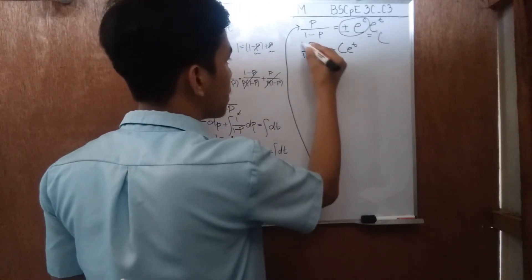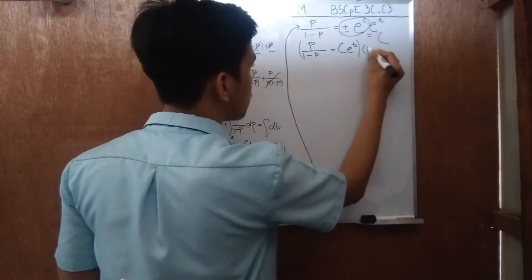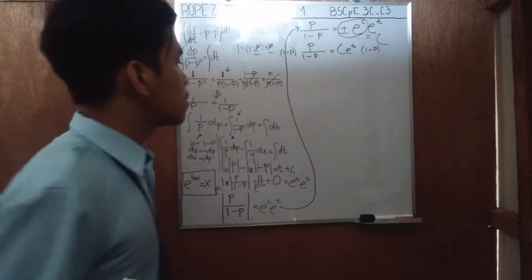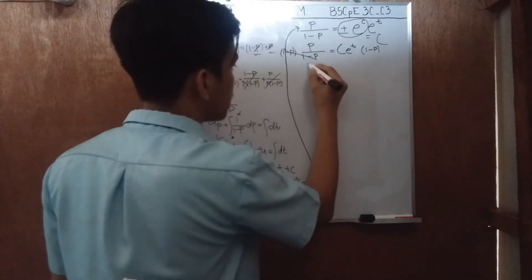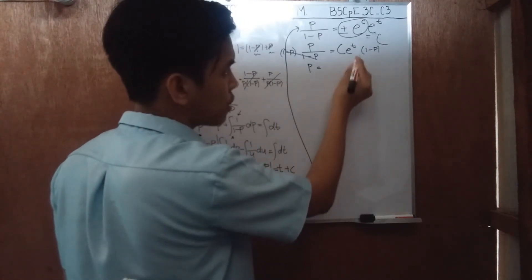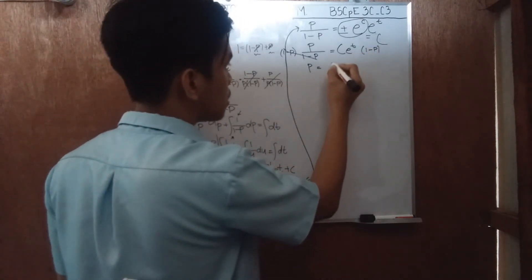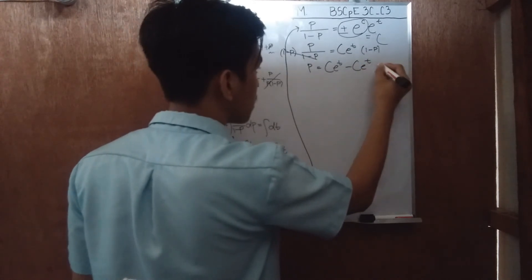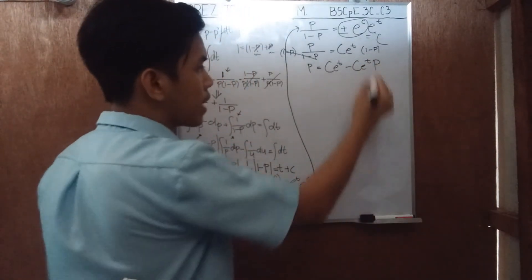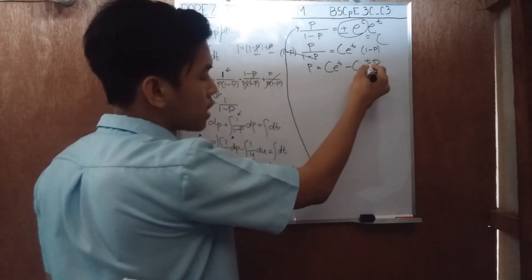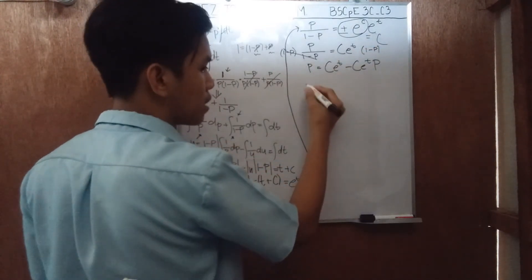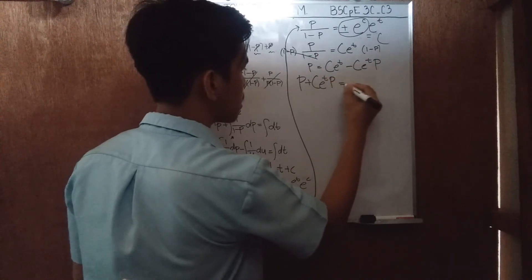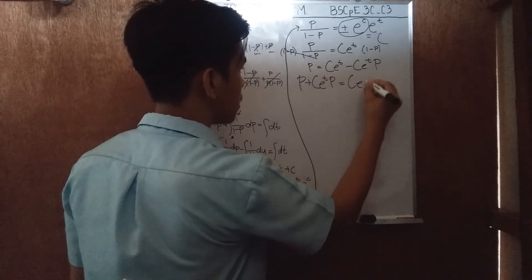So to solve for p, we're just going to need to multiply both sides by 1 minus p and 1 minus p. So this will be cancelled. This will give us p is equals to, I guess, we could distribute this. This will be equals to c e to the t minus c e to the t p. And I will just transfer c e to the t p over here. So this will give us p plus c e to the t p is equals to c e to the t.